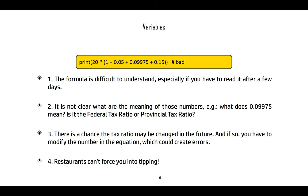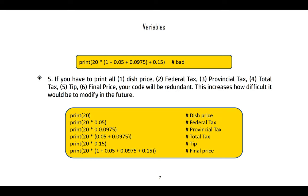There's a chance the tax ratio might change in the future, so we might want flexibility built in. Also, restaurants can suggest a tip — this 0.15 is a suggested ratio. If you have to print the dish price, federal tax, provincial tax, total tax, tip, and final price, your code will be redundant, with more chances of errors, especially if you need to modify it.